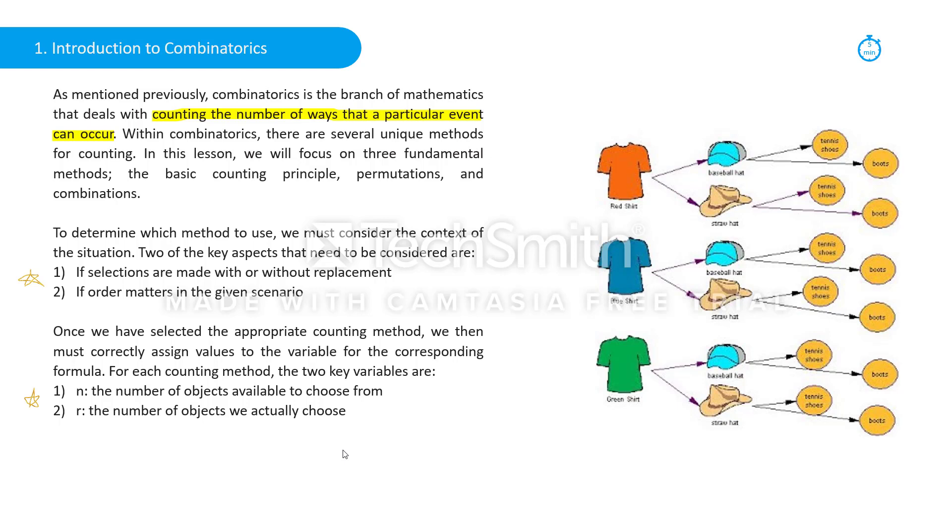Once we have chosen the counting method, we need to assign variables correctly. Each of the methods use the variables n and r, where n is the number of objects available to choose from, and r is the number of objects that are actually chosen.